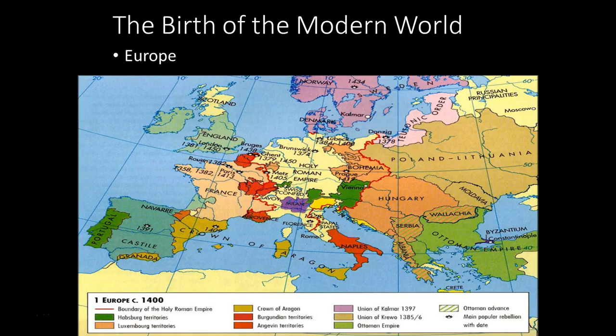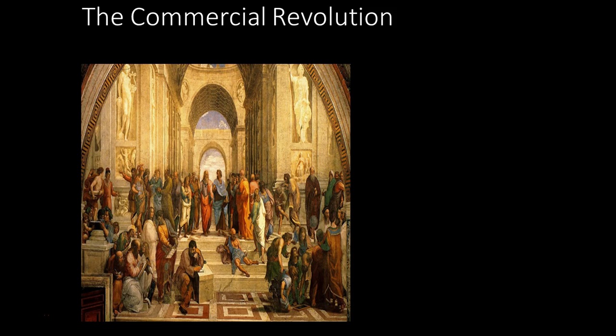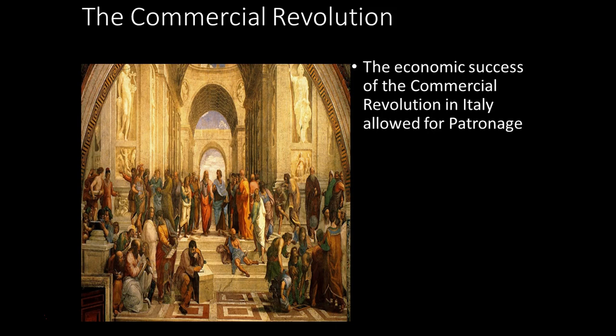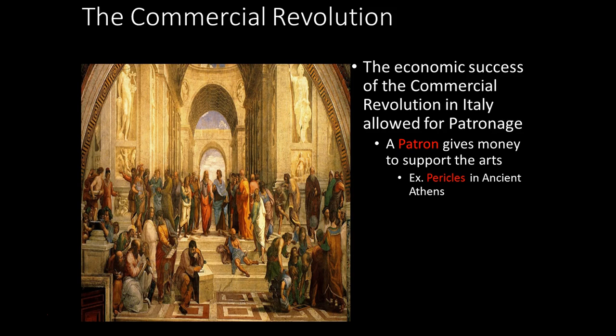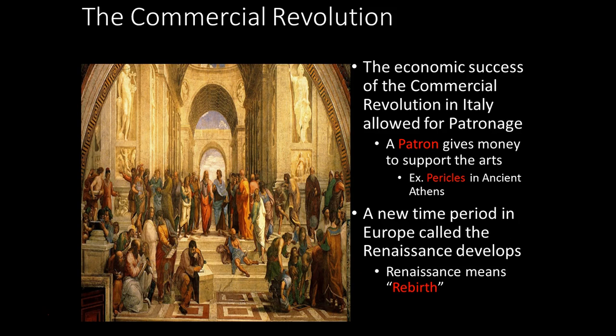Now to Europe and the rise of nation states. First, the Commercial Revolution — a shift from barter economy to using money. Once people have money, they can be patrons, purchasing art. With patronage — like Pericles in Athens — you get a rebirth after the horrors of the bubonic plague: the Renaissance.